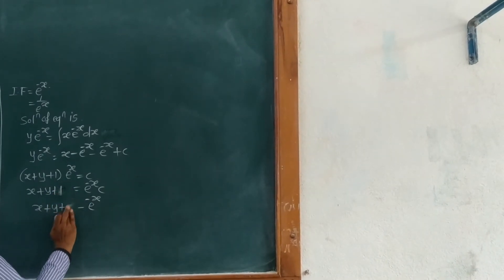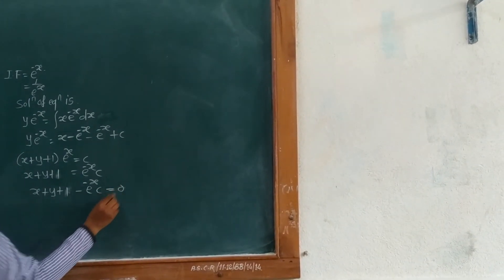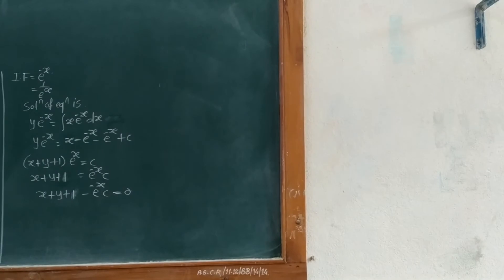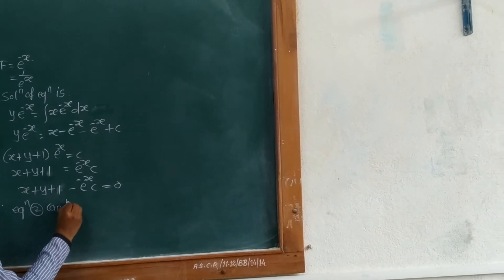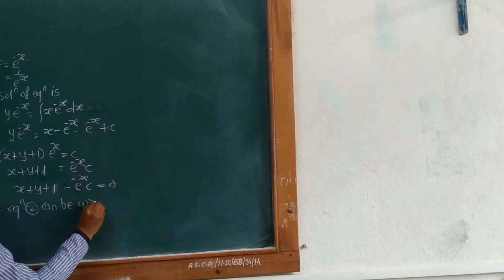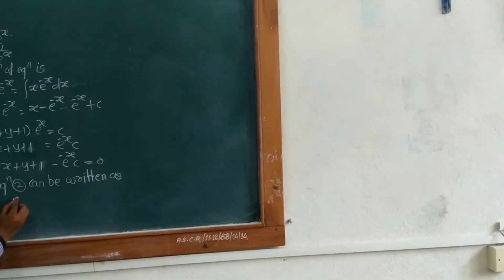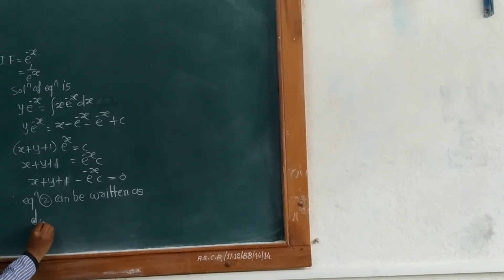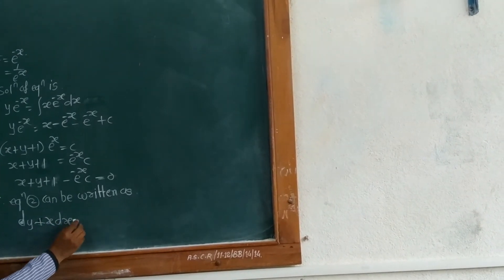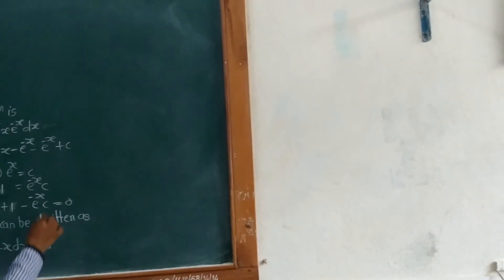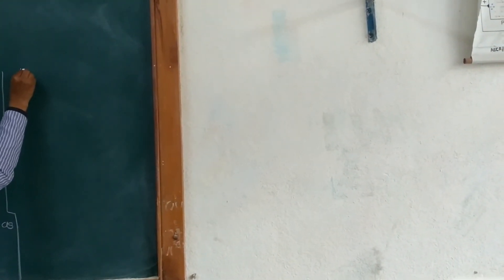Now we integrate equation 2, which is dy/dx plus x equals 0. Rearranging, we get dy plus x dx equals 0, which is a variable separable form. Applying integration, the integral of dy gives y, and the integral of x gives x squared over 2, equalling c1, where c1 is the constant of integration.